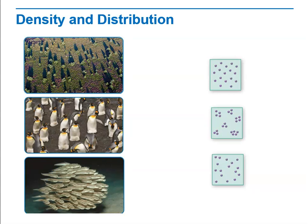Population density refers to the number of individuals per unit area — how tightly packed something is, or how many individuals are in a certain area. Populations of different species often have very different densities, even in the same environment. For example, a population of ducks in a pond may have a low density, while fish in the same community have a higher density. Humans in a big city like New York have a much greater population density than in a small town or suburb elsewhere.